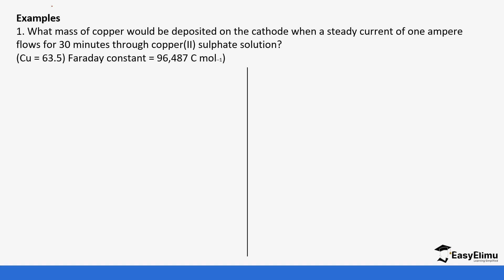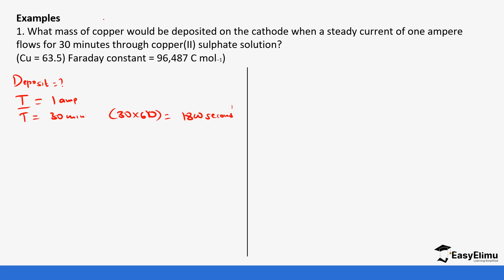Question 1: What mass of copper could be deposited on the cathode when a steady current of 1 ampere flows for 30 minutes — that is 30 × 60 = 1,800 seconds — through copper sulfate solution? The atomic mass of copper is 63.5 and the Faraday constant given is 96,487.